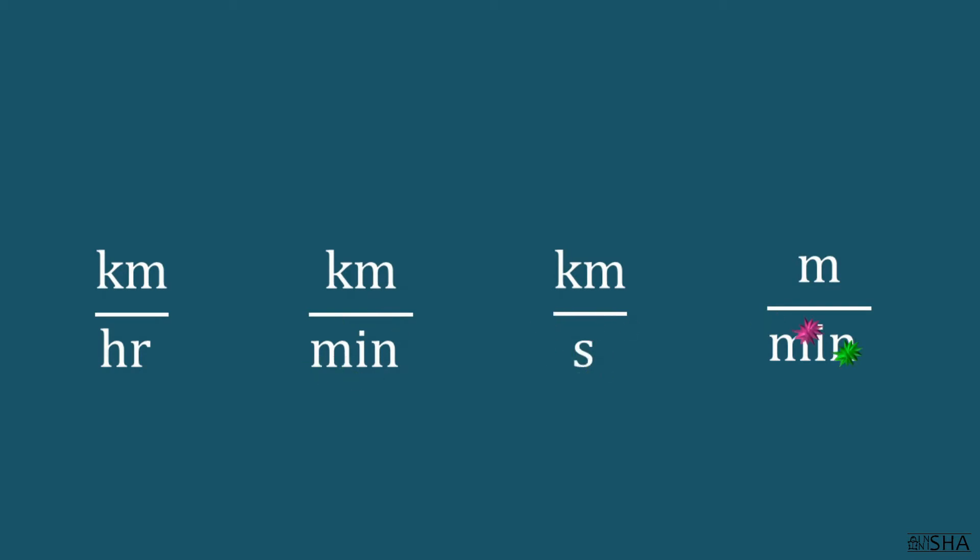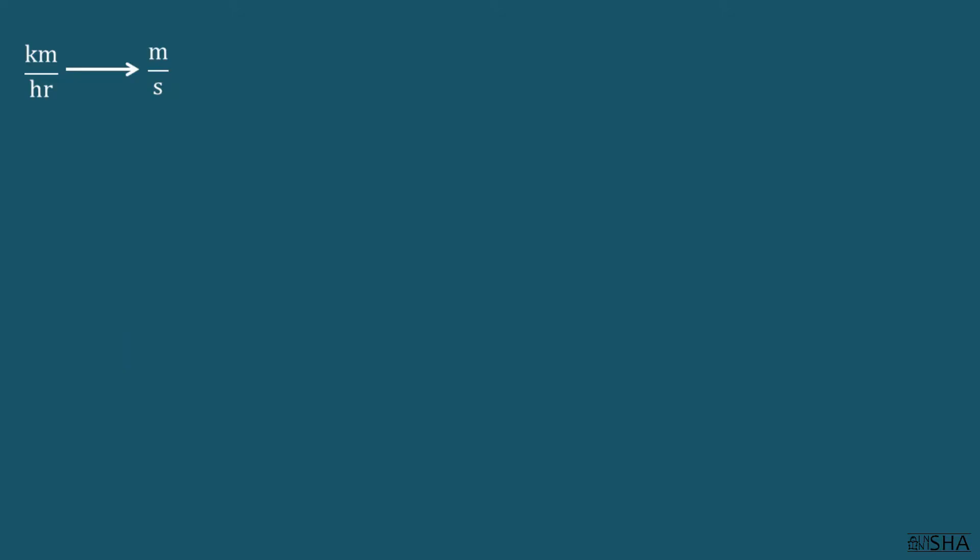Let's try to convert with some examples. Convert 72 kilometers per hour into meters per second. The number 72 must be multiplied by a fraction.